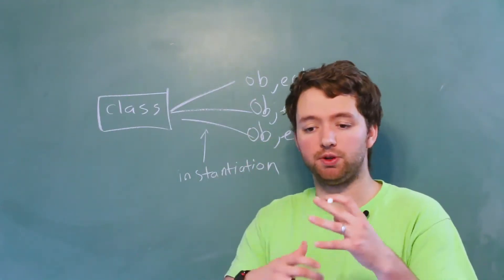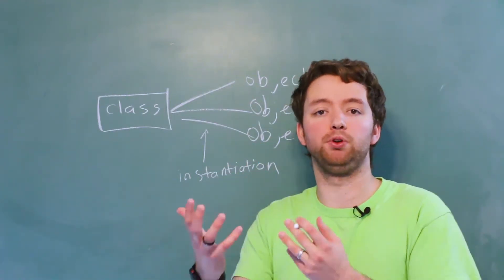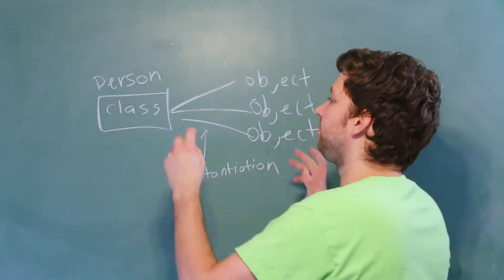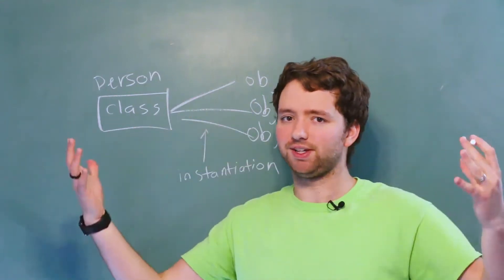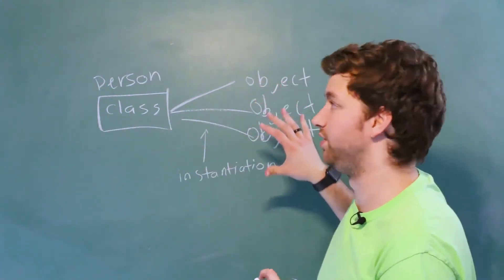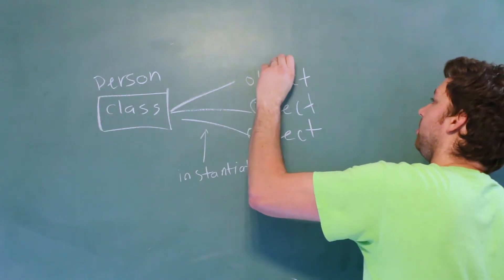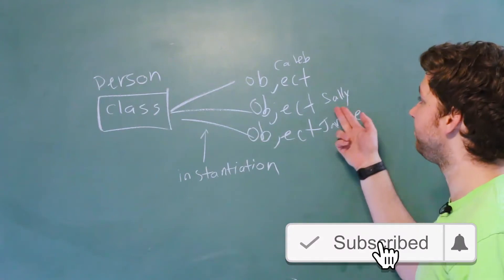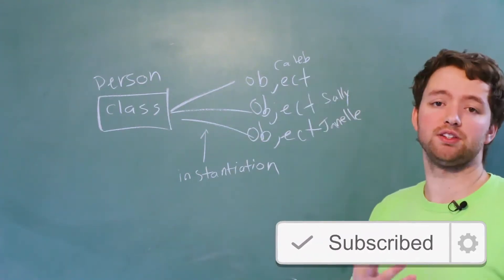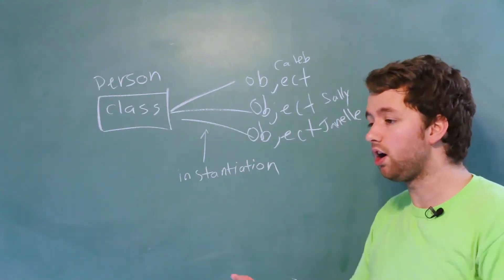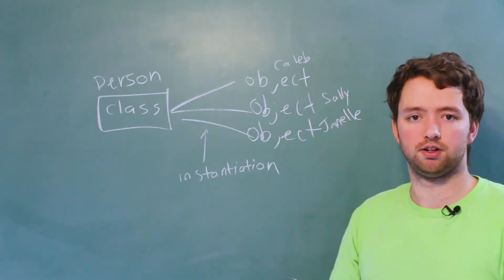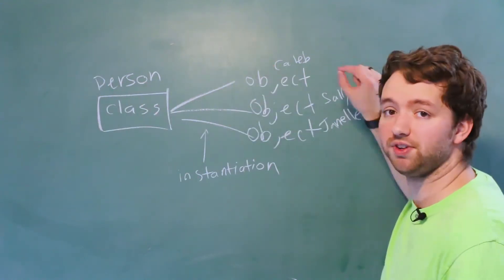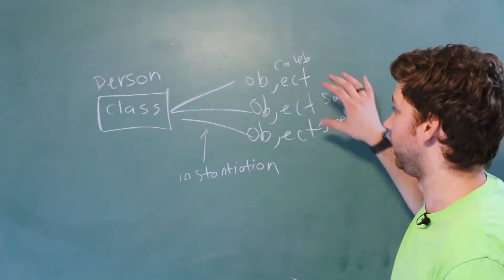In the context of people, if we wanted to basically structure people or users, this would be a Person class, which is very general — a person is not a specific individual. These are the individuals: we might have Caleb, we might have Sally, and we might have Janelle. People have things in common; they usually have a name, they can walk, they can talk, etc. So we can generalize what a person is in this class, and we can define the specifics for the individual over here in the object.